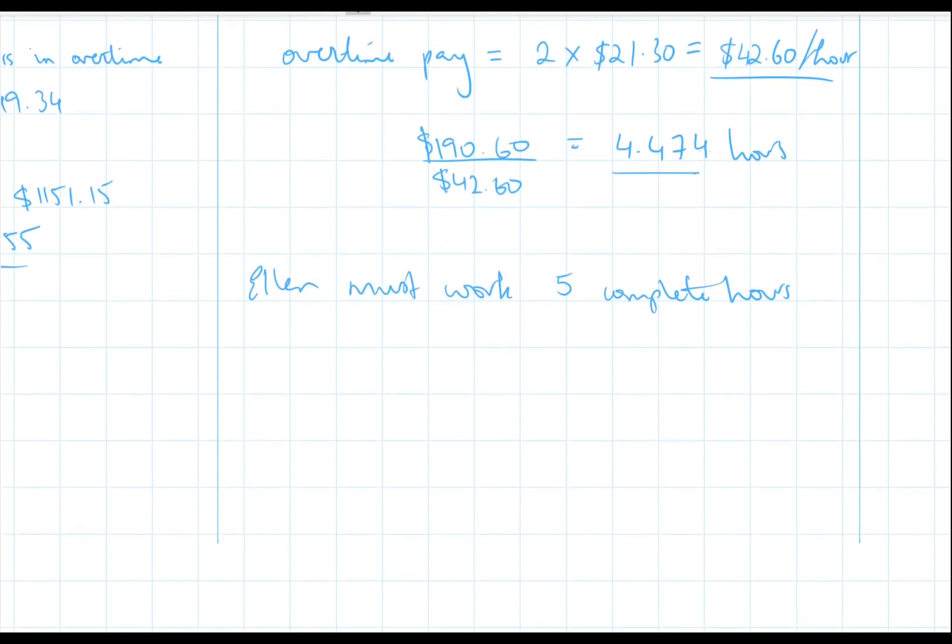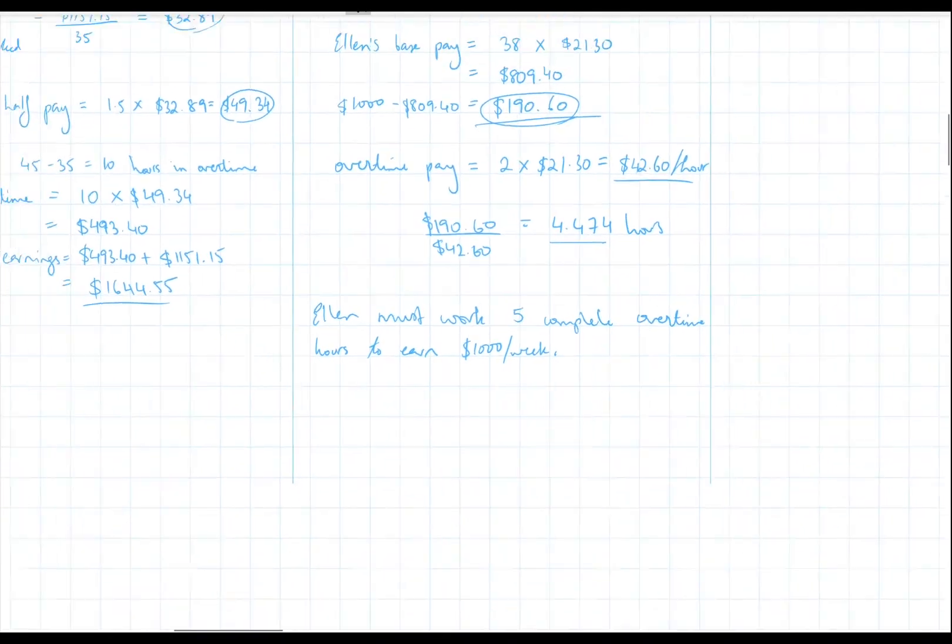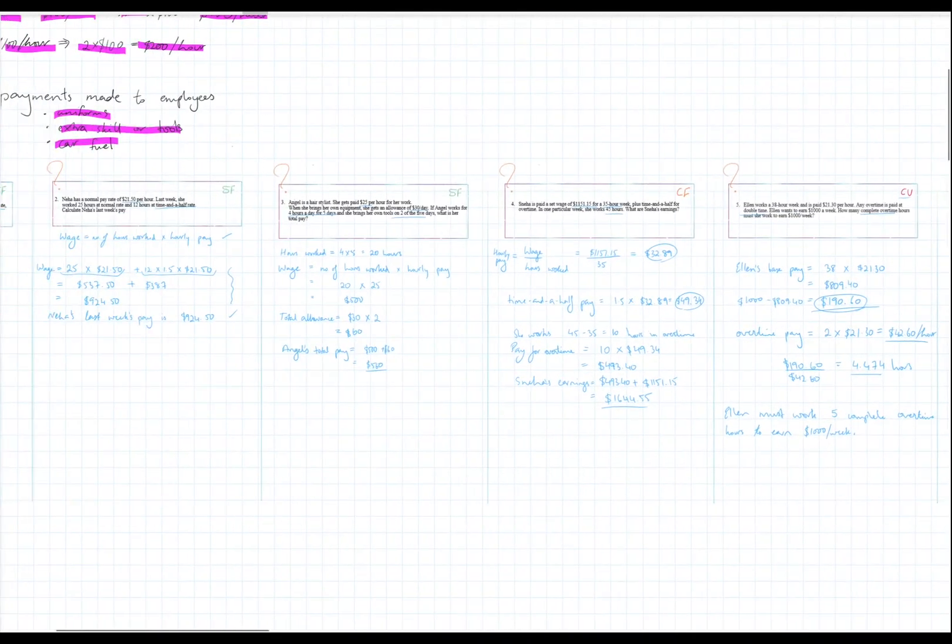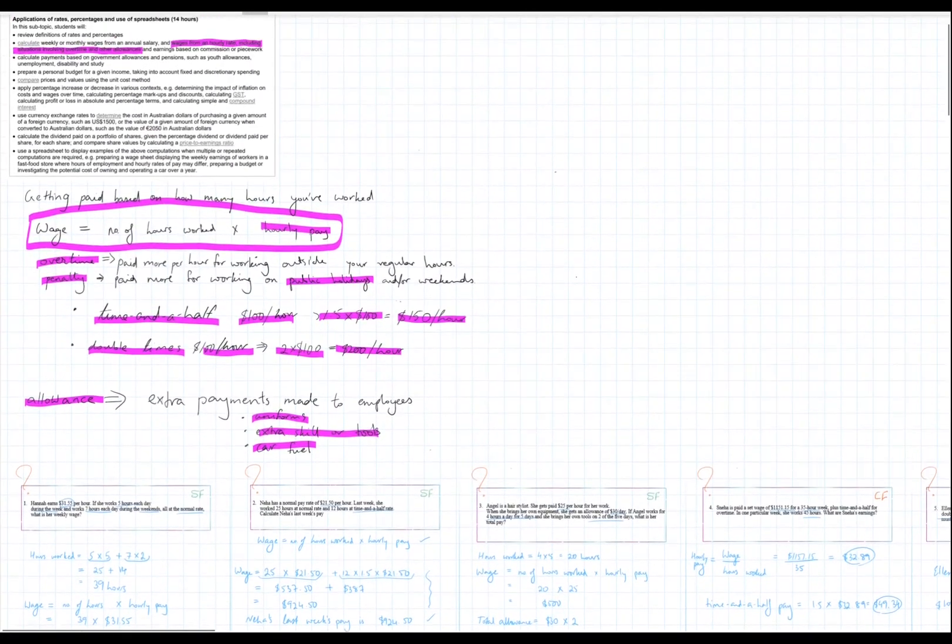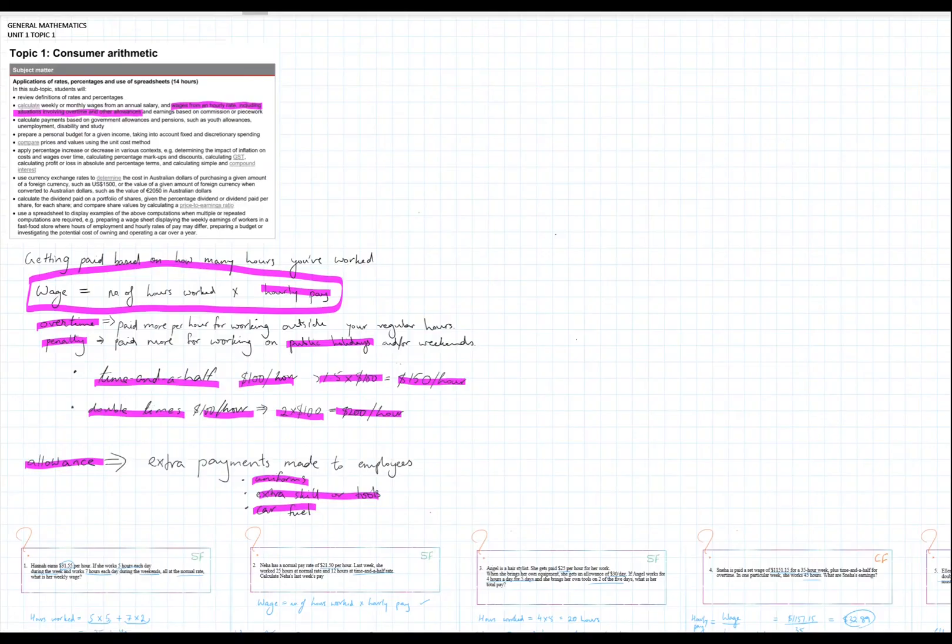So Ellen must work 5 complete overtime hours to earn at least $1,000 a week. Okay, I hope that made sense. If you have any questions, feel free to post them in the comments below and I'll have a look. And I'll see you back in another video to cover another point of Unit 1 Topic 1 in General Mathematics. And I'll see you then. Thanks for watching. Bye!